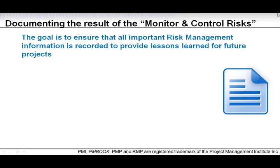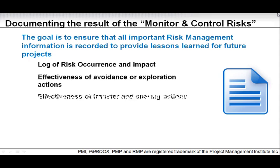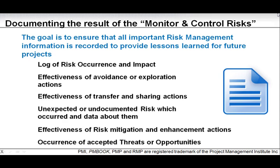Let's go into documenting the results of the monitoring and control risk process. The goal is to ensure that all important risk management information is recorded to provide lessons learned for future projects. To achieve this, we need to log risk occurrence and impact, document the effectiveness of avoidance or exploitation actions, and document the effectiveness of transfer and sharing actions — for example, if we buy insurance or engage in opportunity sharing, we need to record how effective that was. We also need to document unexpected or undocumented risks which occurred and data about them.